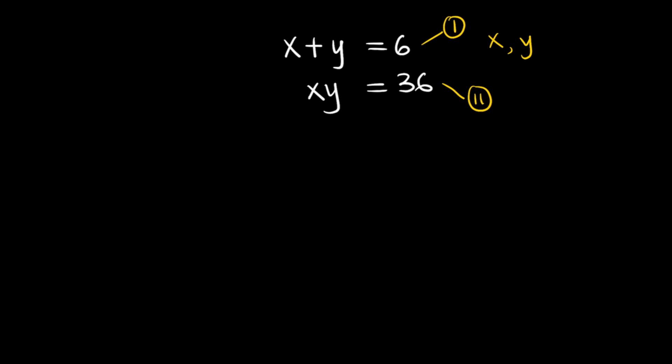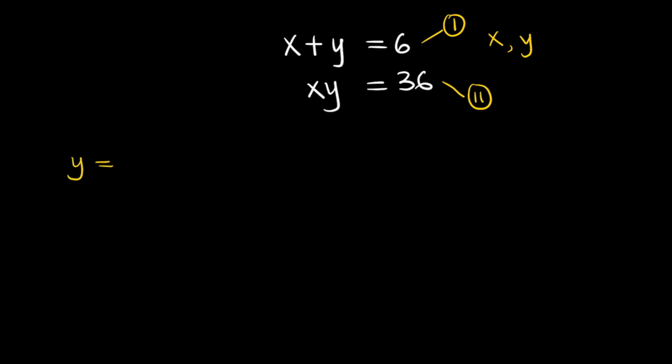Now this is a simultaneous equation, and to solve for x and y I would in the first equation make either of the variables the subject of the formula. For the first one, I could say let y be equal to 6 minus x. What I'm then going to do is replace the y in the second equation with 6 minus x, making the second equation x into 6 minus x is equal to 36.